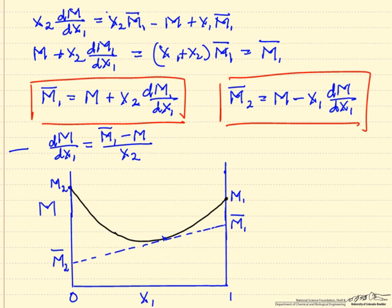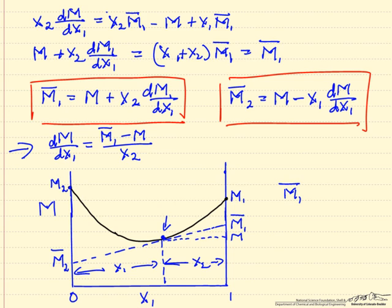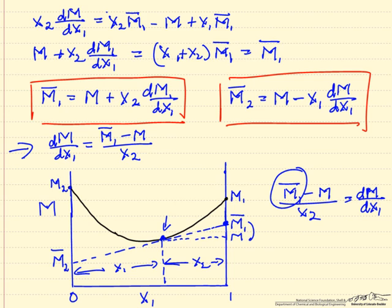Rearranging to solve for the derivative gives the slope at any chosen point. If I pick a point — the property M at a given mole fraction x1, with x2 at that point — I can see the difference M̄1 minus M divided by x2 is the slope, equal to the derivative of M with respect to x1. This means the intercept at x1 equals one must be the partial molar quantity M̄1, and similarly M̄2 at the other end.